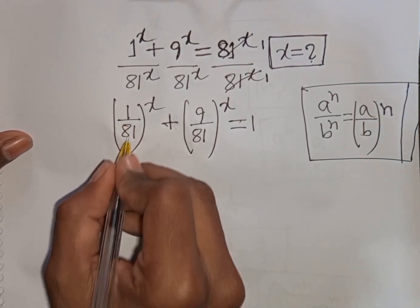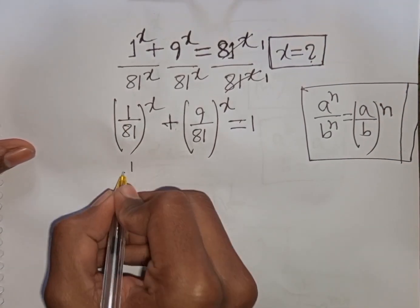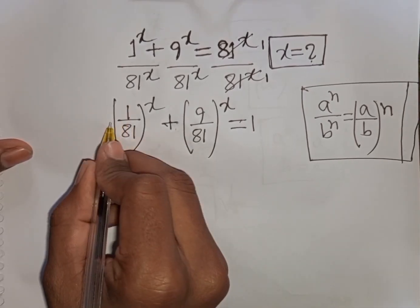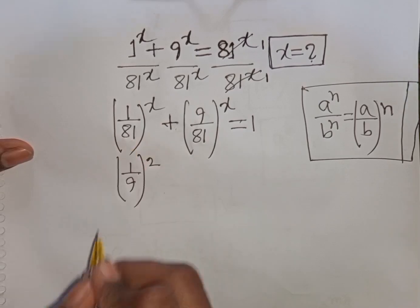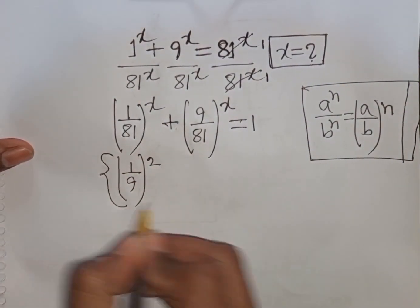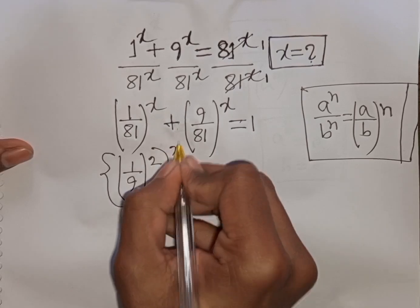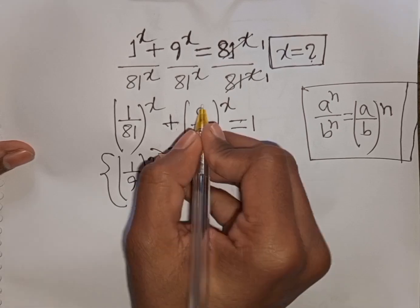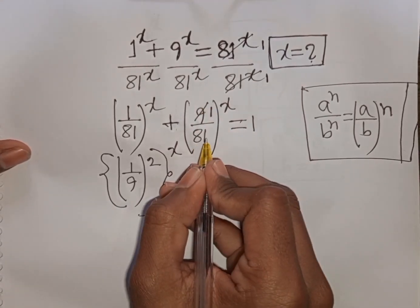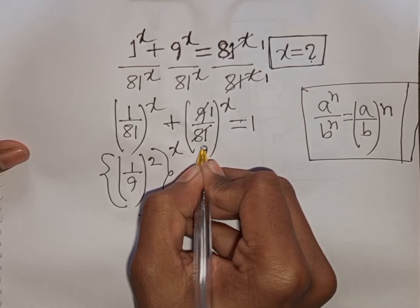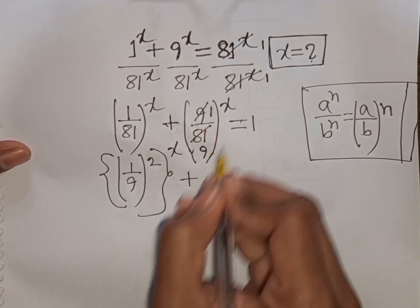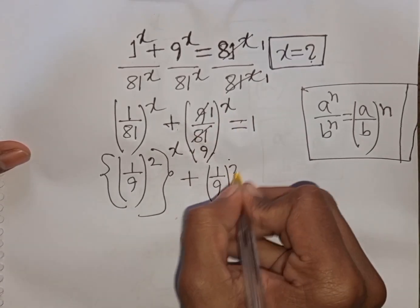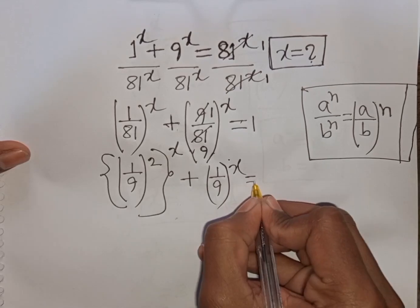Now 1 by 81 can be written as (1 over 9) power 2, since 1 squared is 1 and 9 squared is 81. So the first bracket becomes (1/9)^2 raised to power x. Also, 9 divided by 9 is 1 and 81 divided by 9 is 9, so we have (1 over 9) power x plus (1 over 9) power 2x equal to 1.